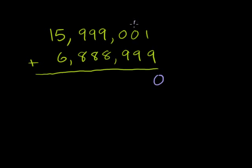So 1 plus 9 is 10 - write the 0, carry the 1. 1 plus 0 plus 9 is 10 - write the 0, carry the 1. 1 plus 0 plus 9, that's 10 again - write the 0, carry the 1. Now 1 plus 9 is 10, plus 8 - 10 plus 8 is 18. Write the 8, carry the 1.